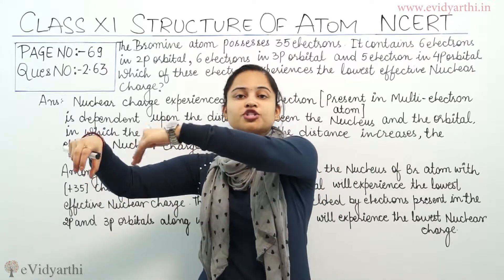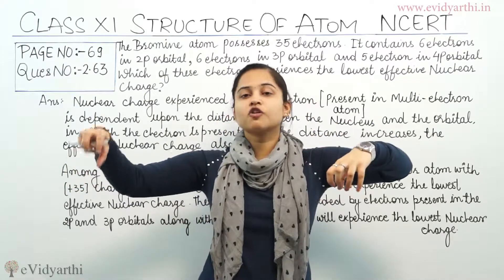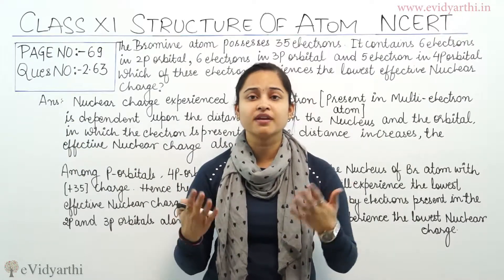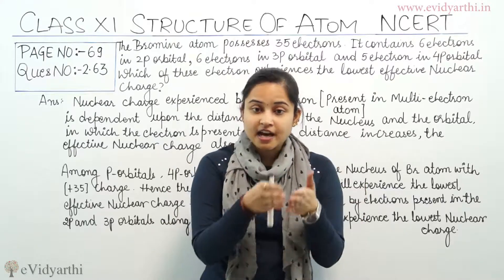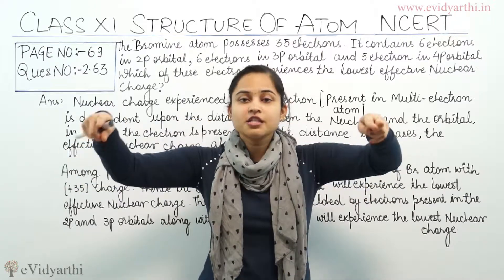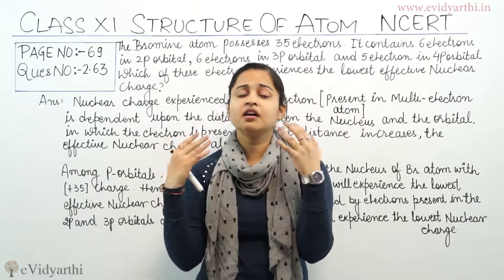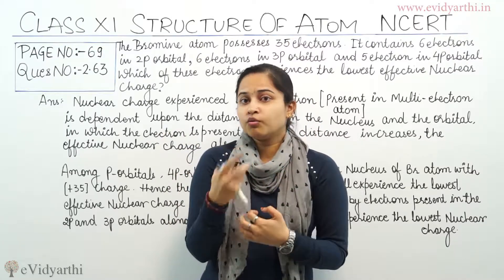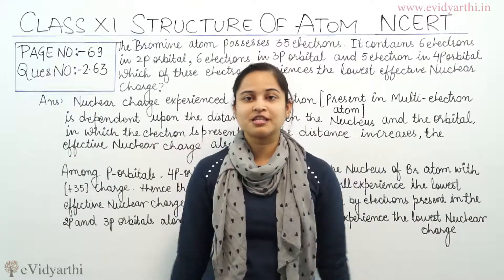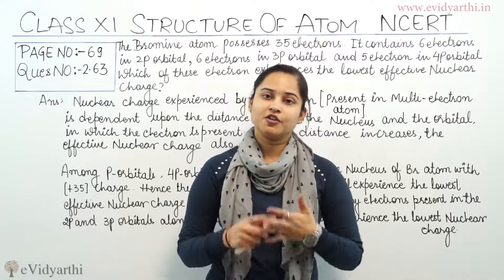The electron in 4p orbitals is shielded by the other orbitals which are in front of it. Between the nucleus and the 4p orbital, there is a bridge of the 1s, 2s, 2p, 3s, 3p, and 3d orbitals. These orbitals between the nucleus and the 4p orbital play a role of shielding — they shield the 4p orbital from the nucleus. Therefore, it is obvious that the electron in the 4p orbital will experience the least effective nuclear charge.